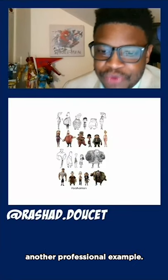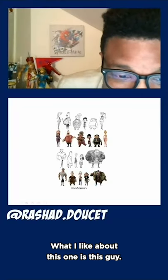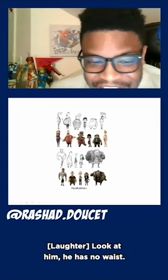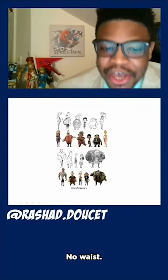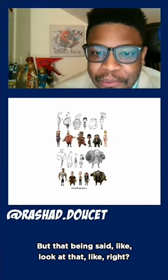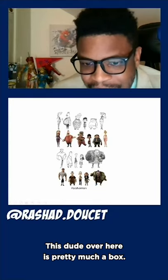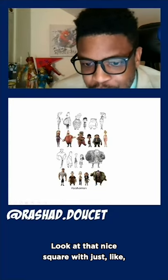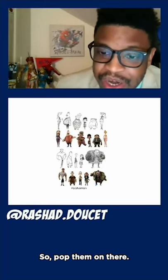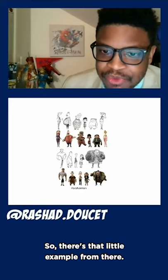This is another example from ParaNorman. What I like about this one is this guy — he is literally a T-shape. No waist. If you watch the movie ParaNorman, one of those stop motion movies — great movie — look at that T-shape. This dude over here is pretty much a box — a nice square with just legs, which could be sticks when you're starting out. Just pop them on there, little circles here and there.